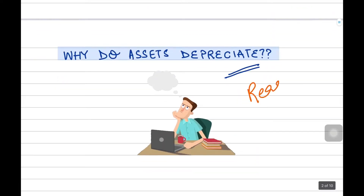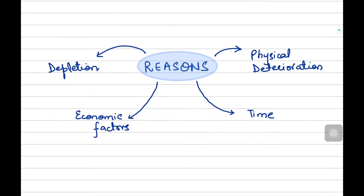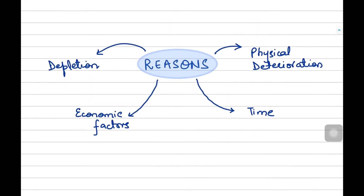That is, what are the reasons behind assets depreciating? Basically, there are four main reasons. One of them is the physical deterioration of non-current assets. Secondly, because of time. Thirdly, because of some economic factors. And lastly, because of depletion.